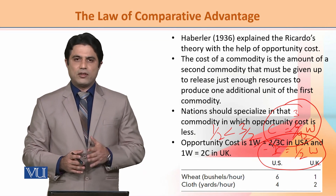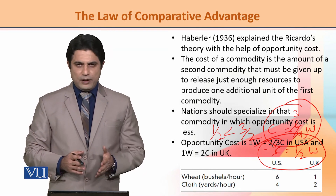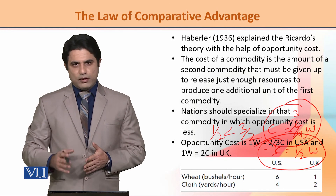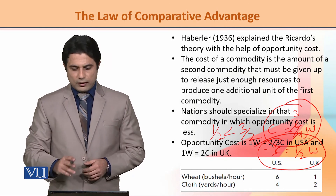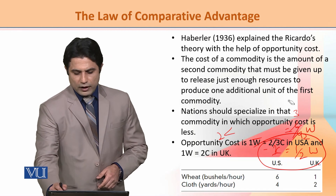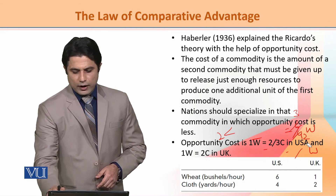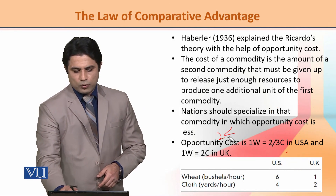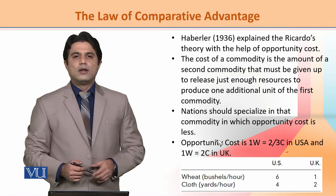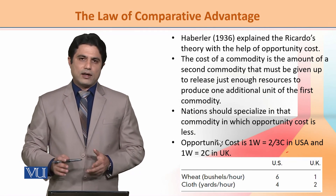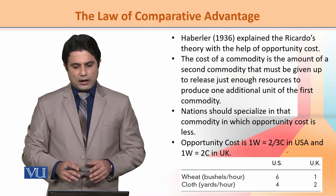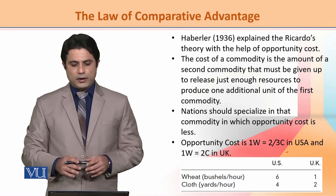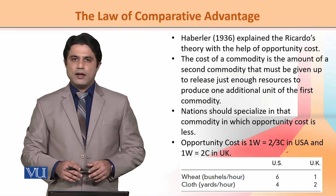That is how trade will happen between the two countries — USA will specialize in the production of wheat, and UK will specialize in the production of cloth. This is how we have explained the comparative advantage theory using the opportunity cost theory in this section.